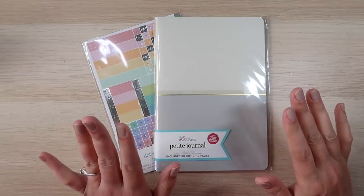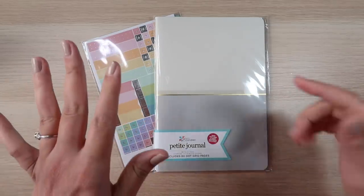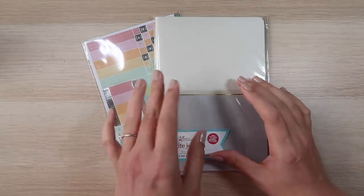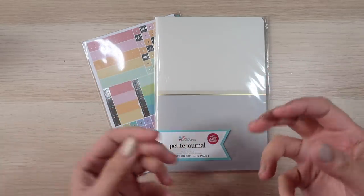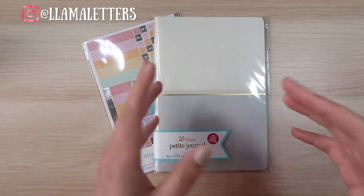Hi everybody, today I am taking a look at the new Erin Condren Petite Journals. These are the dot grid journals that they have released kind of as a bullet journaling sort of situation to use in their folio system.